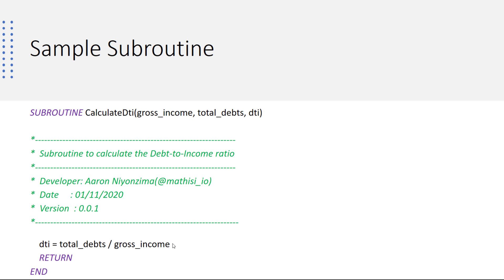When invoking our subroutine, it is going to calculate the DTI and return it. So we don't specify this value after the return keyword. We simply determine the value, write the keyword return, and end.